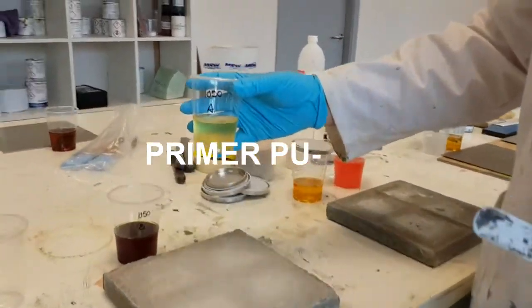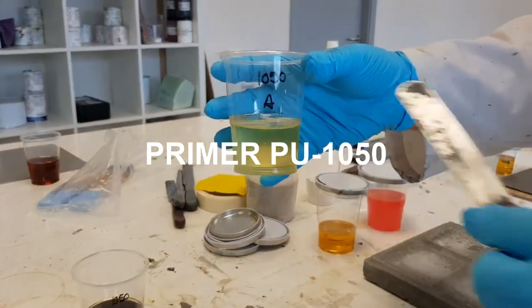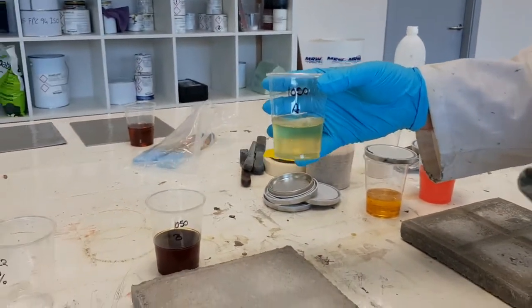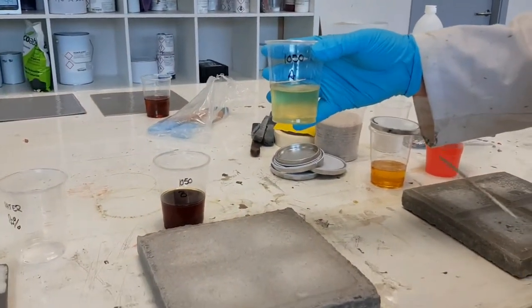This one for primer? This primer is for 1050. This is the primer, the PU primer, solvent base, designed for concrete.